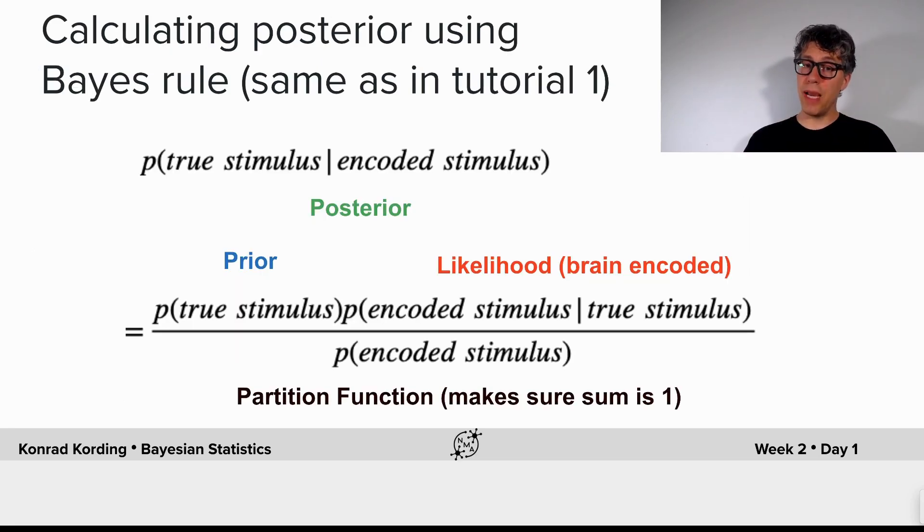Given that we have the prior, which now is just slightly different - it's just the sum of two Gaussians - we can calculate the posterior using Bayes' rule. And this shows you the strength of the Bayesian approach.